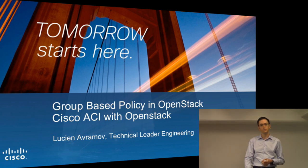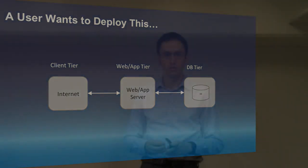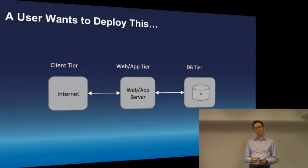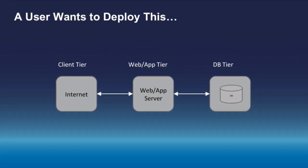To get started, when we look at what users want to do around deploying networks, the end users typically want to deploy applications. Here's an example of a three-tier application — client, database, and web — and that's what they want to deploy in their infrastructure. That's their end goal.